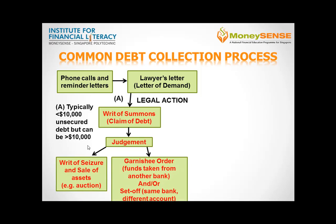When a writ of seizure and sale is issued, an officer of the court is directed to seize the movable property belonging to the debtor and arrange an auction sale for the seized property.